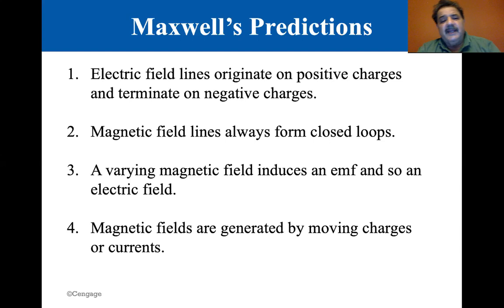And then number four, magnetic fields are generated by moving charges or currents. Remember the right-hand rule? If you have current in a wire, you have magnetic fields formed around the wire. And those are basic, fundamentally, what Maxwell's equations, Maxwell's predictions here, what they say.